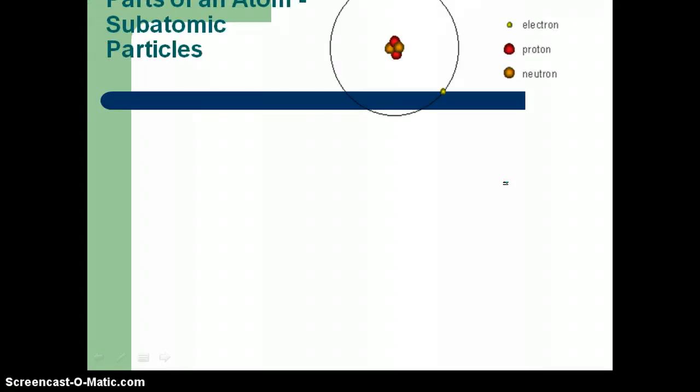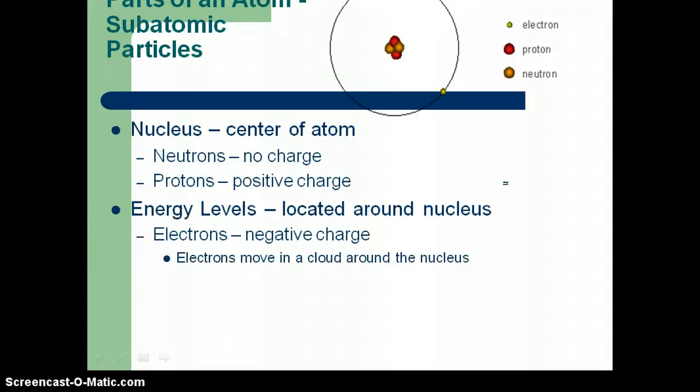So if we look at the parts of an atom, and kind of where those are found, we're going to see that the nucleus is the center of your atom. So if we take here, nucleus, that's going to be this section right here, the center of the atom. And you're going to have two things in there. The neutrons that have no charge, and often I represent that as an N with a little zero there showing no charge. And the protons with a positive charge, so I usually do that with a P and a plus.